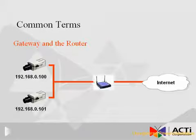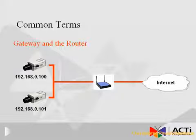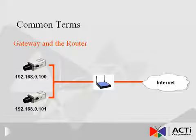A router is needed when devices are used across different network types. Sending cameras on a local area network, or LAN, out to the internet is a common use for the router. This enables all devices on the LAN to share the same internet IP without the need to purchase a unique internet IP for each.